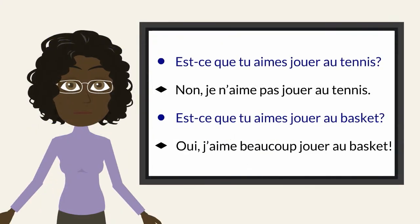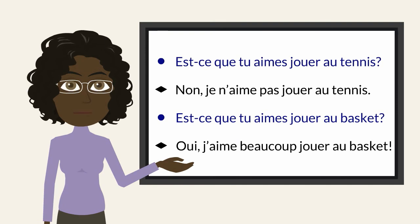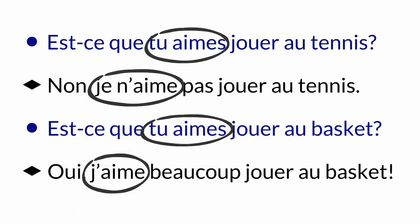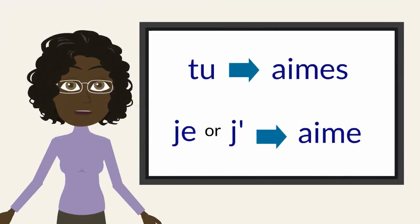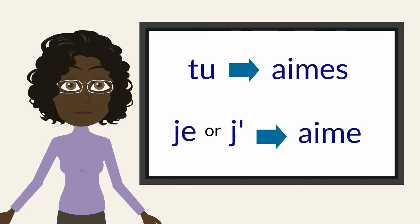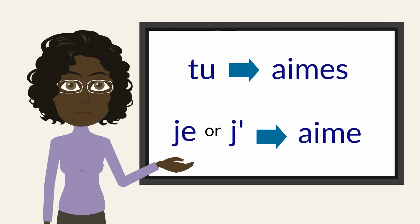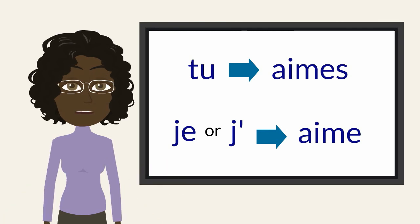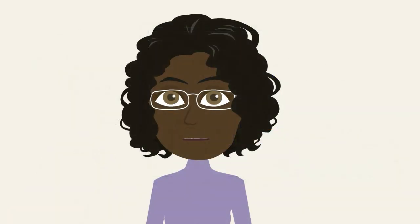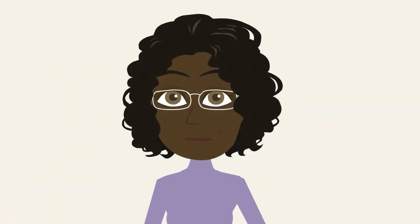So, what changes from the question to the answer when we talk to friends about liking something? The questions use the word tu with aimes, and the answers use je or j' with aime. When you want to ask a question about what sport a person likes to play, you start the question with tu followed by aimes. And when you answer, you will use je or j' followed by aime. Notice how we start some questions in French with est-ce que, which is a common expression to signal that a question is being formed and appears before the subject tu and the verb aime.